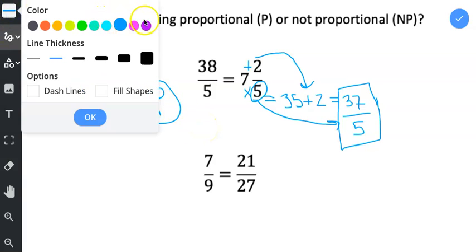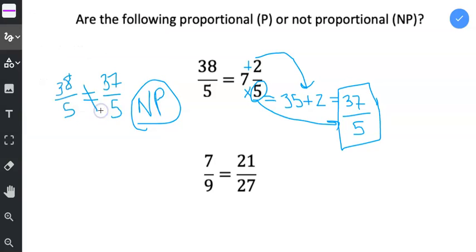All right, let's look at this next example. 7 ninths, is that equal to 21 twenty-sevenths? Well, 21 and 27, I know that I can divide each of those by 3.